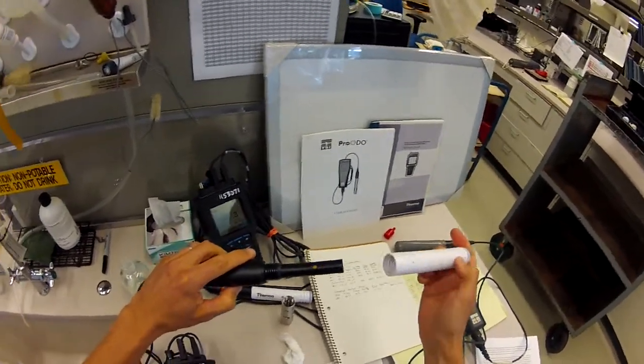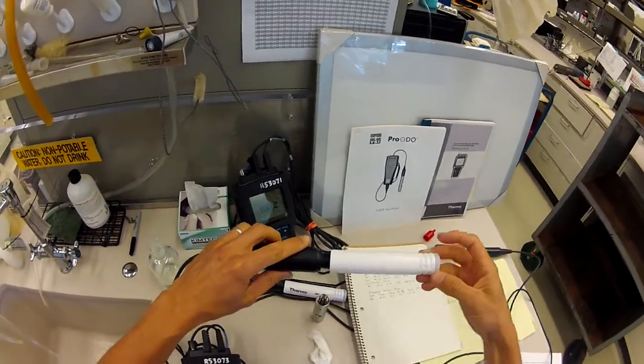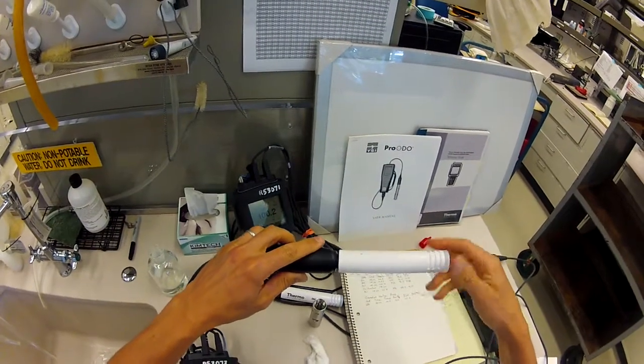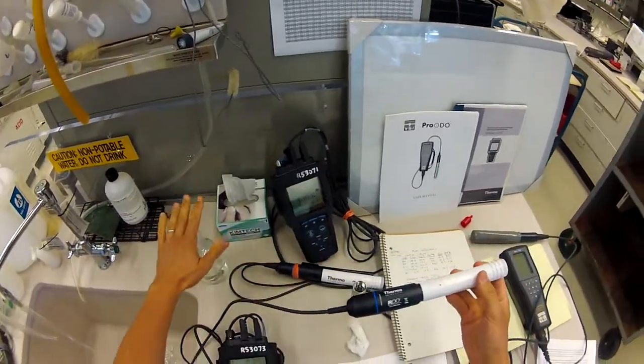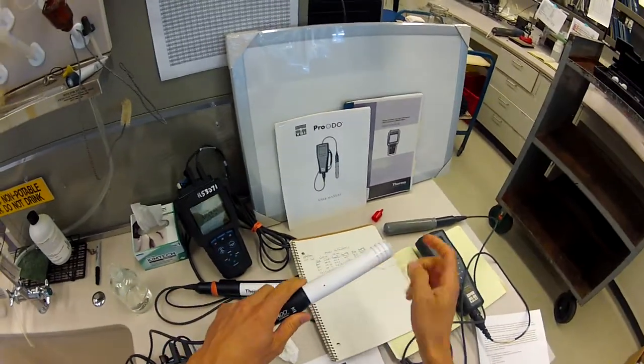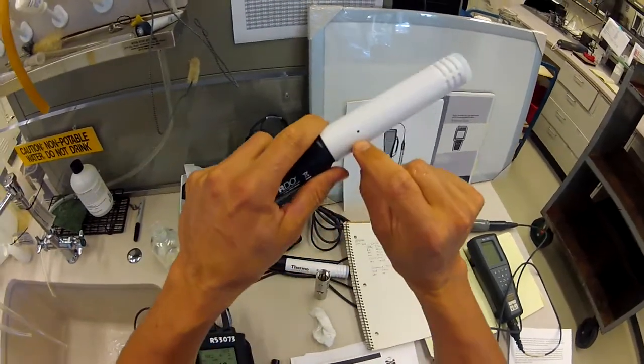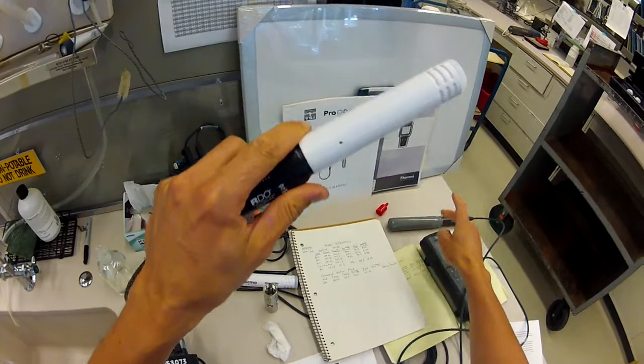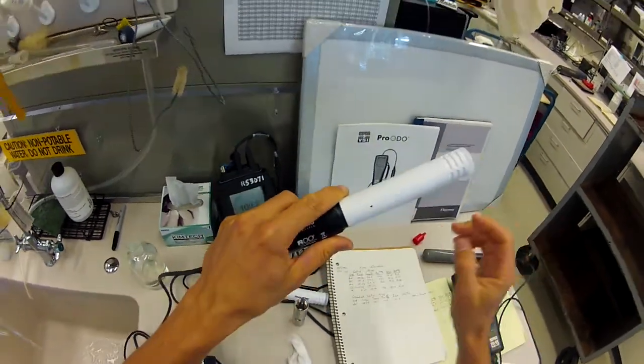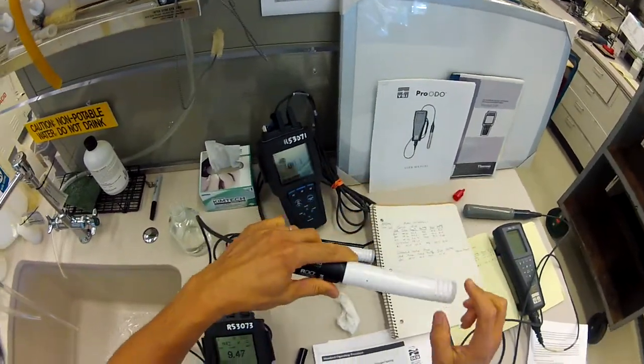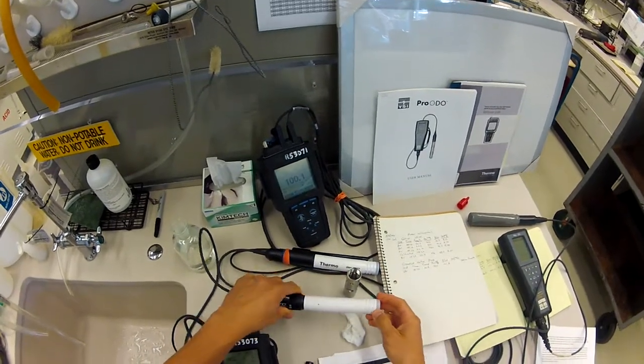So we've got that moist sponge in our chamber and we screw it on. The other element of the calibration chamber, whether you're using something like a BOD bottle or something like this, is that it needs to be vented. Here you can see a vent. The YSI has a vent on the side there as well. All these chambers need to be vented so that they're at equilibrium with barometric pressure.